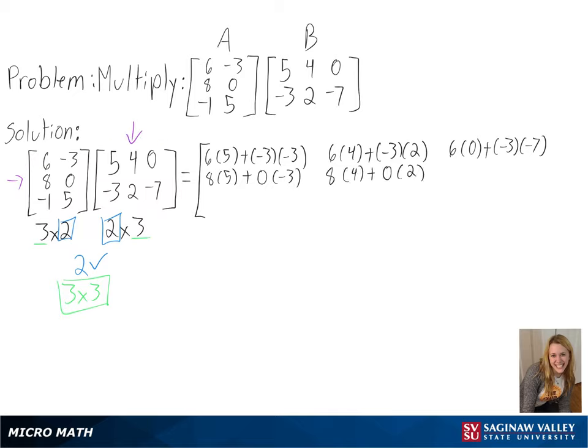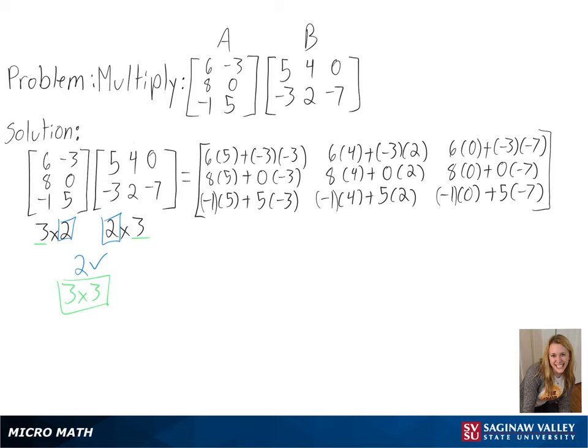We will continue to do this with the next two rows until each has been multiplied. Now, since all of our rows and columns have been multiplied, we can start simplifying.